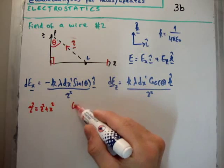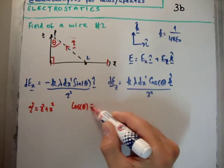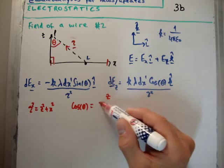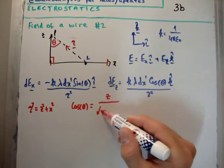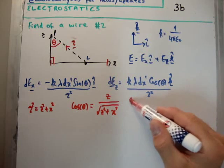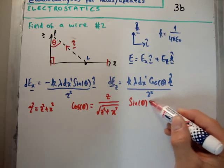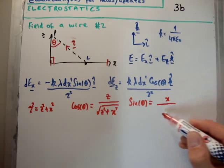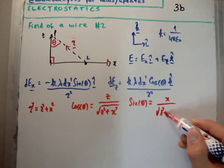Cos theta: sin theta is equal to z divided by the square root of z² + x², and sin theta is equal to x over the square root of z² + x².